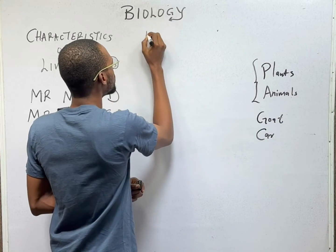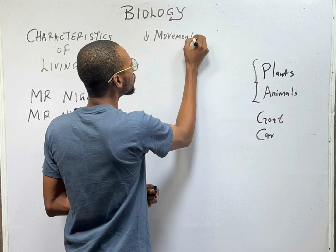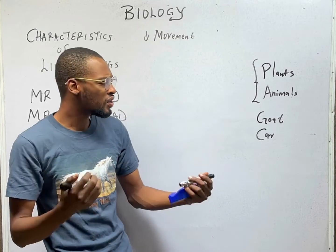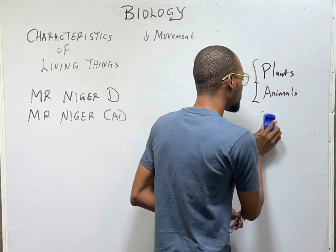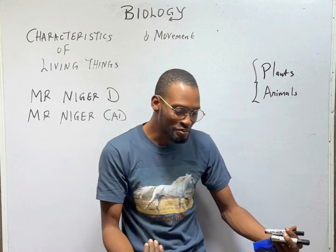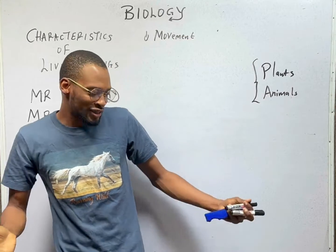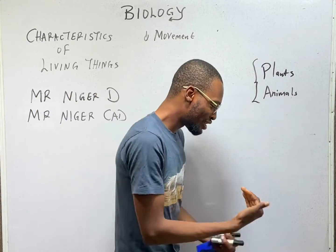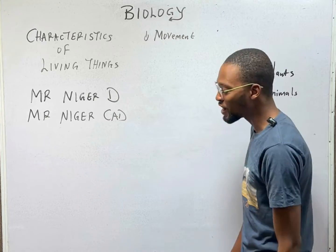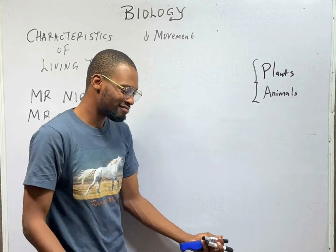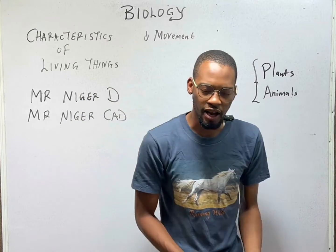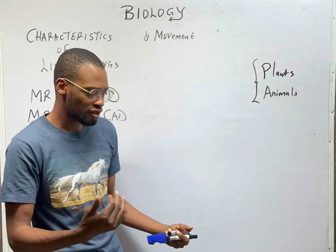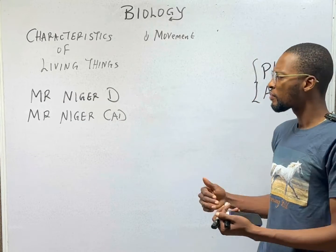M stands for movement. Living things move from one place to another, or they move parts of their body, depending on whether you are dealing with plants or animals. Living things move for different reasons — for food, or to move toward something attractive, or there is danger and you run to escape that danger. For animals, we move all of our bodies, so we exhibit very visible motion and we move very fast.